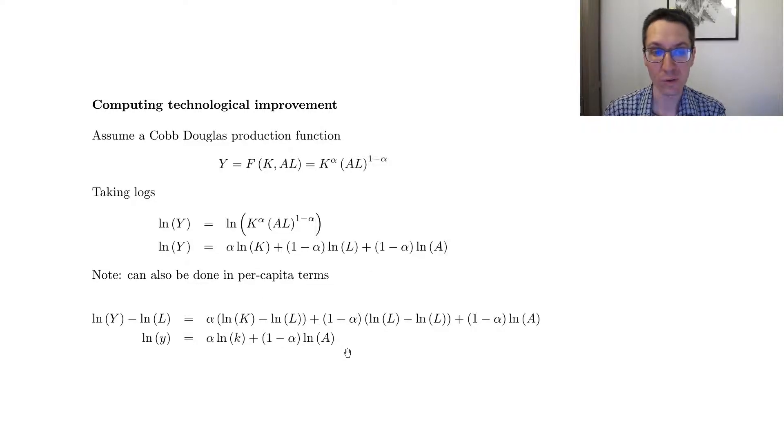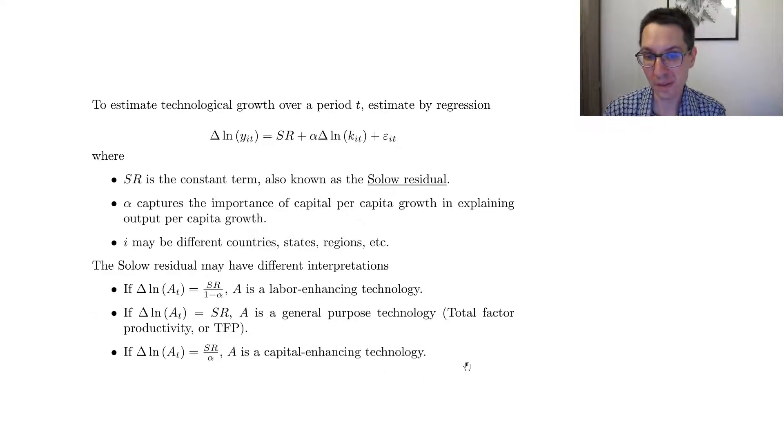Now, to estimate technological growth over some period T, we would do the following. I would represent some different countries, states, regions, and T would be the time period at which we want to estimate it. And we would estimate this formula here. So, delta log of y_it, so the change between log y_i(t+1) and y_it, would be equal to SR. And SR here, we're going to call this the Solow residual.